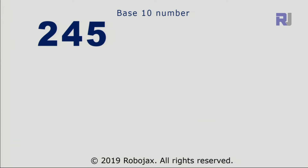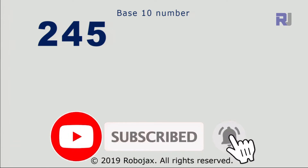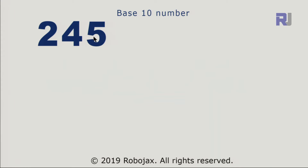Let's start explaining base 10, which is decimal. For example, when we write 245 in decimal, we have a first, second, and third place value. Numbers go from 0 to 9 — that's 10 different values. After 9, we add one more place. After 99, we add another place, giving us 100. Now let's see what that means mathematically.